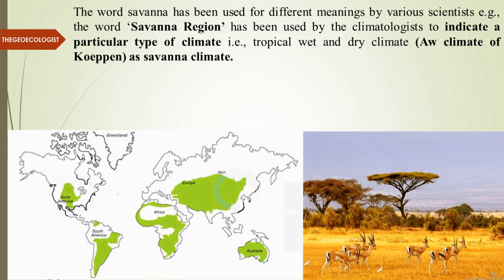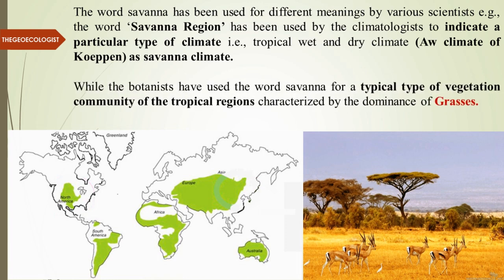According to Köppen's classification, AW is the Savannah climate — the tropical wet and dry climate. Botanists have used the term for the vegetation community of the tropical and subtropical region, talking about grassland areas where the dominance of grasses is found.